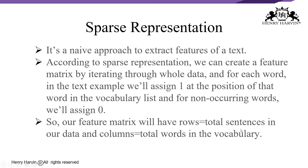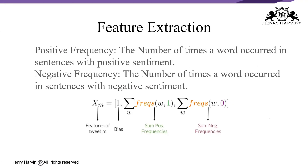The feature matrix has rows equal to the number of sentences in the data and columns equal to the total words in the vocabulary. When working with language processing, handling raw text directly is a problem, which is why we use feature extraction techniques. A disadvantage of sparse representation is that it may require large training time and prediction time.